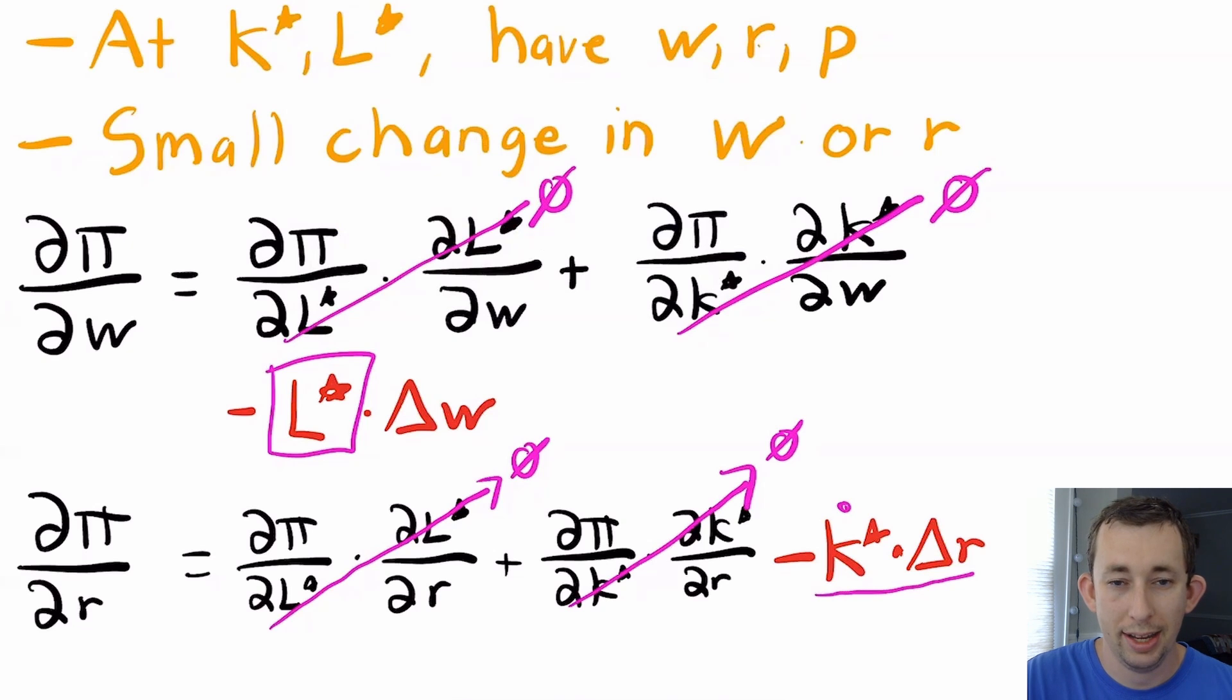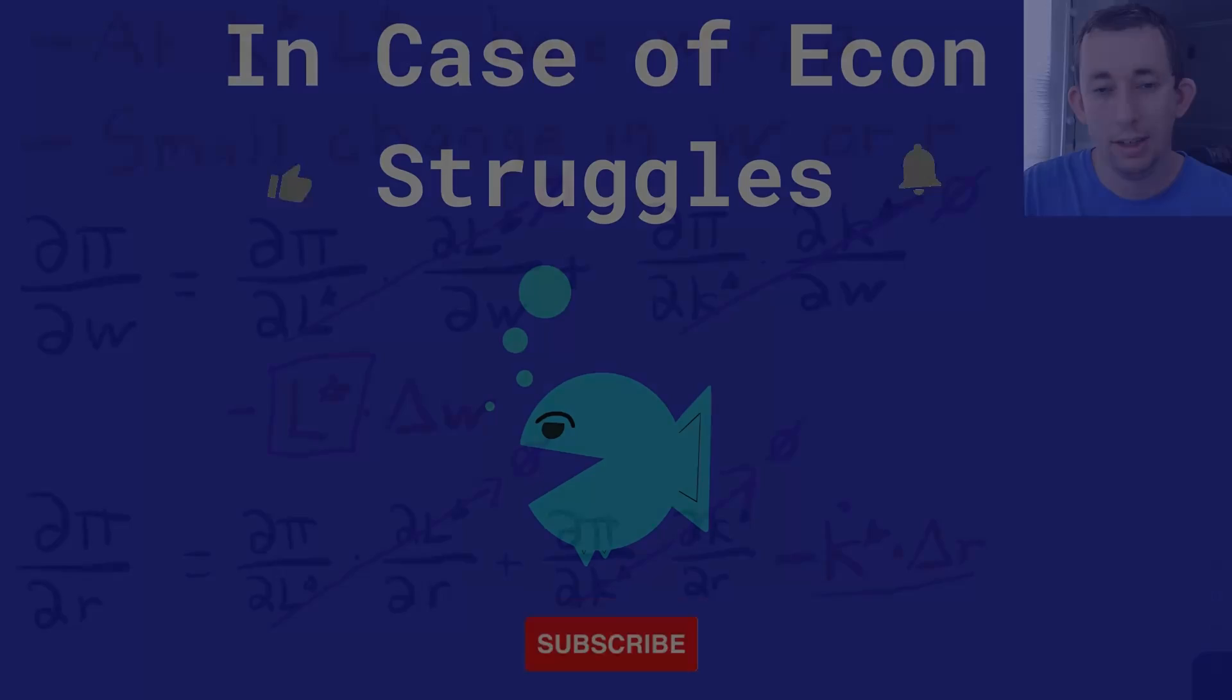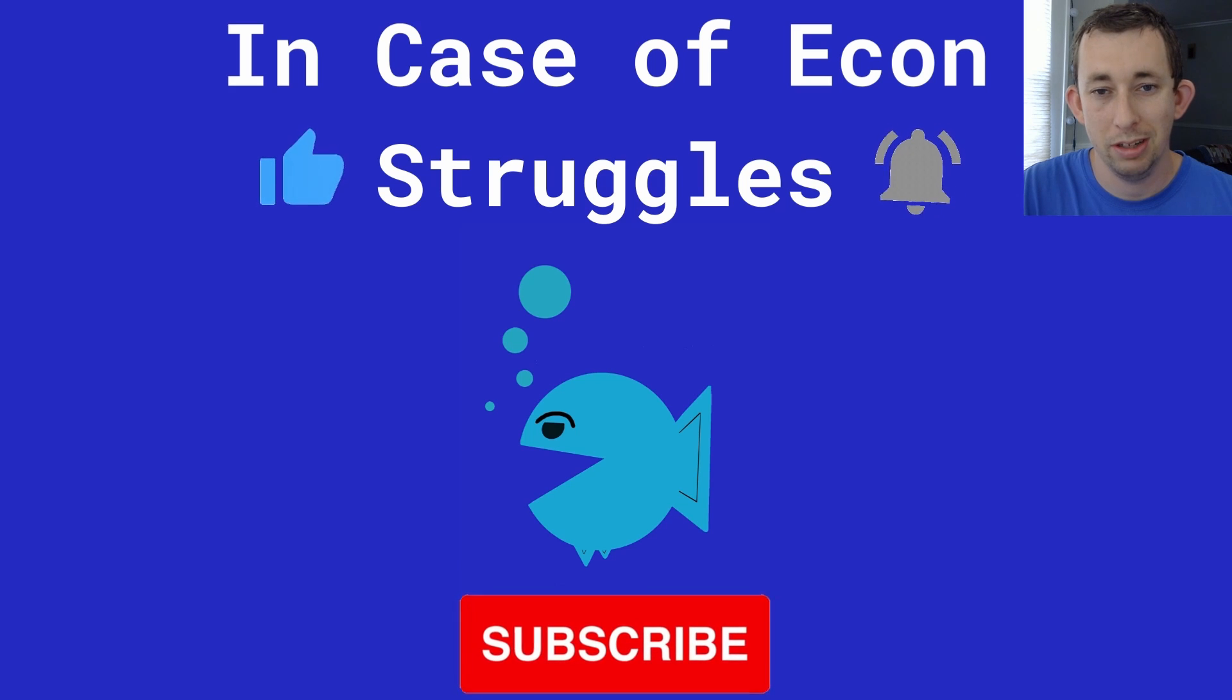That's how you can back out L* using the envelope theorem from the profit maximization problem and the value function of profit. If this was helpful, make sure to like and subscribe. See you next time for another case of econ struggles.